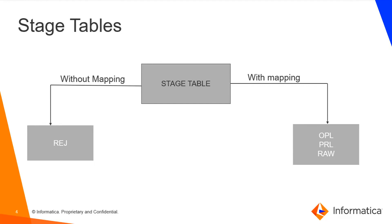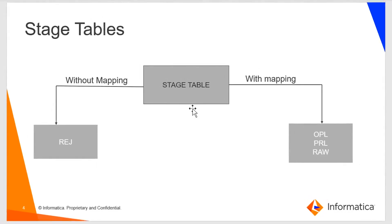First, let us talk about staging tables and the support tables formed along with them. As we can see in this diagram, when a staging table is initially created there won't be any mapping created for it — we will just have one support table, that is the reject table. Whenever we load data to the stage table and there is some issue, it will go to the reject table. Next, when we create a mapping from a landing table to the staging table, three more tables are created: the OPL table, PRL table, and raw table.